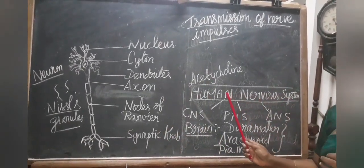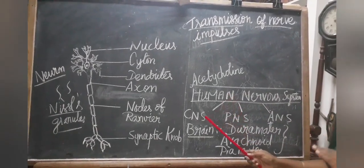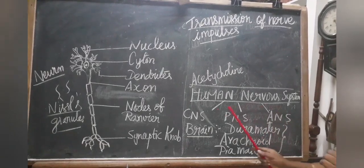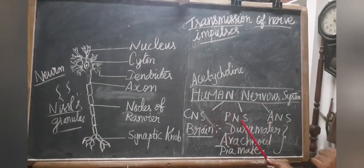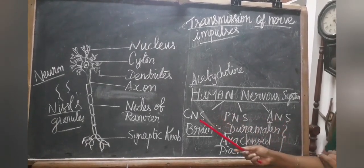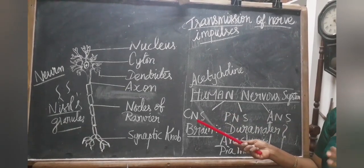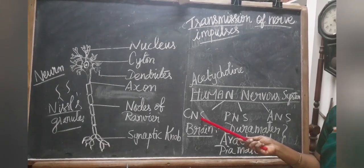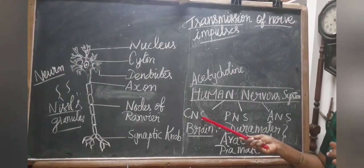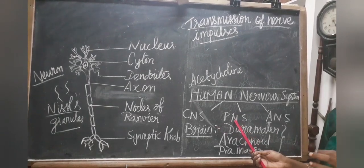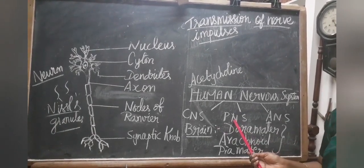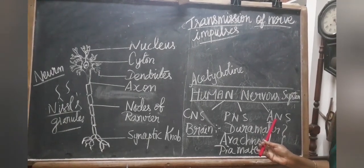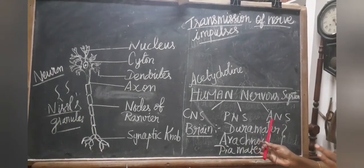The human nervous system is divided into three parts: the central nervous system, the peripheral nervous system and the autonomic nervous system. The central nervous system processes information and consists of the brain and spinal cord. The peripheral nervous system connects nerves to the brain and spinal cord. The autonomic nervous system contains sympathetic and parasympathetic nerves.